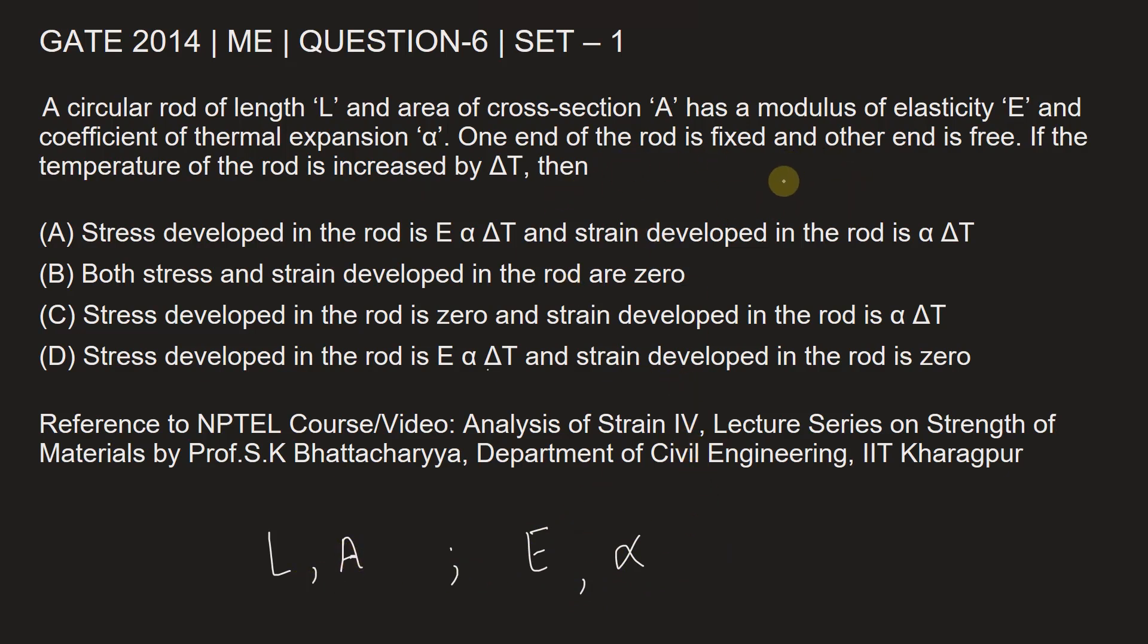End conditions are given: one end is fixed and another end is free. So it looks something like this, one end is fixed and other end is free. If the temperature of the rod is increased by delta T, there is an increase of temperature of the rod by delta T.